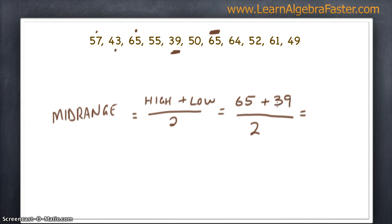So we have 65 plus 39 divided by 2 will be our mid-range. So 65 plus 39 gives us 104. And when we divide 104 by 2, we get our mid-range, which is 52.